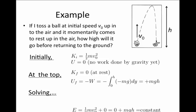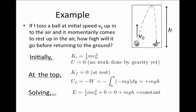If we solve and we say that the energy of the system is constant, in other words, the initial kinetic energy plus the initial potential energy equals the final kinetic energy plus the final potential energy, then we have that one half m V0 squared has to equal mgh.